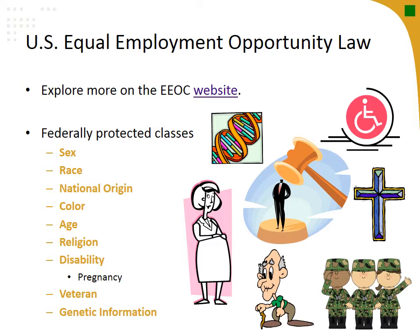Age is also covered under EEO law through the Age Discrimination in Employment Act, or ADEA, of 1967. This only forbids age discrimination against people who are 40 or older — it doesn't protect workers under 40, though some states do have laws protecting younger workers. The ADEA protects older workers from employment practices aimed at saving money, making it illegal to fire older workers to hire younger ones. Many companies have fired longer-tenured employees who earned raises to save money, and this law makes that illegal.